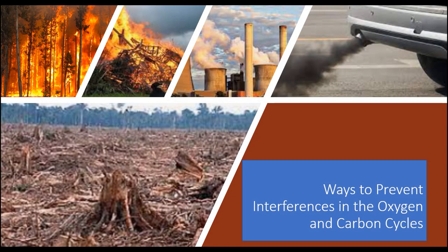From what you have learned, we can see that the photosynthesis process is very important as it is the only process that uses up carbon dioxide in the air and returns oxygen back into the air. The destruction of green plants, also known as green lungs, causes fewer trees to release oxygen and absorb carbon dioxide from the atmosphere during photosynthesis. As a result, the oxygen content in the atmosphere decreases while carbon dioxide content increases.